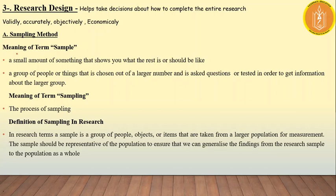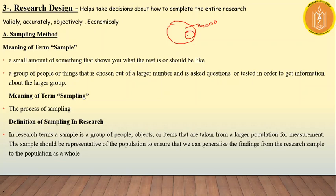If we look at a sample: suppose we have a population of 1,000 or 10,000 people. It is not practically possible to collect data from every single person. So we derive a sample from this population — in this sample we may have only 100 people. Basically, a sample is a representative of the complete population.